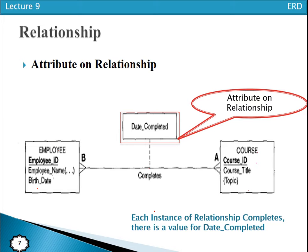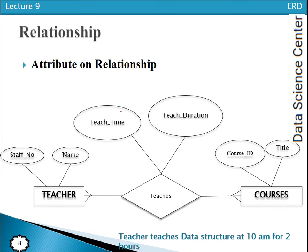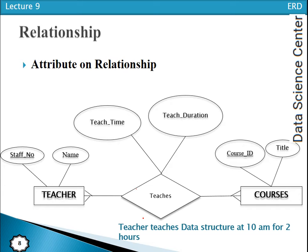Each instance of the relationship 'Completes' has a value of that date completed attribute. Similarly, consider entity types Teacher and Course, with attributes teacher ID, teacher name, course ID, and title. The relationship is 'Teaches,' and attributes such as teach time and teach duration cannot be associated with either entity alone — one teacher teaches many courses with different durations. So teach time and teach duration are placed as attributes on the relationship. For example: a teacher teaches Data Structure at 10 a.m. for two hours.